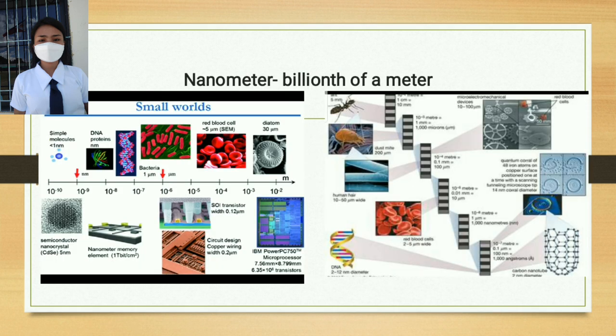When we say nanometer, it is one billionth of a meter. Examples of things at the nano scale include simple molecules, DNA proteins, red blood cells, diatoms, SOI transistors, DNA, and so much more.